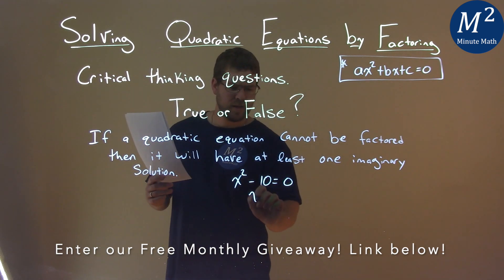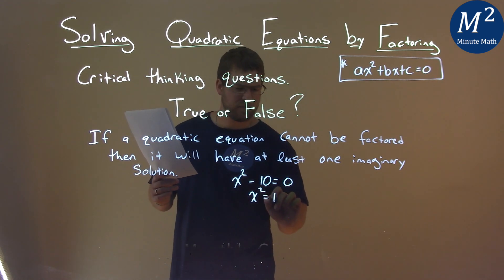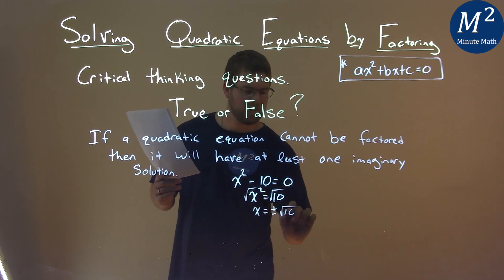But if I add 10 to both sides, I have x squared equals positive 10. I take the square root, and x equals plus or minus the square root of 10.